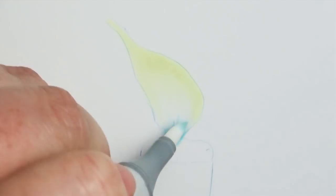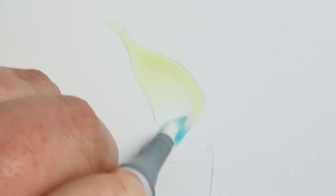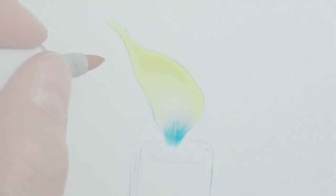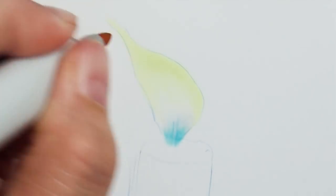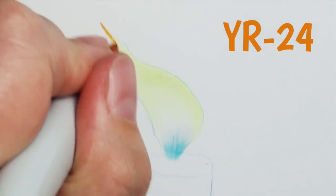A colorless blender can be your best friend at this point, especially if you're trying to preserve your white but you need to blend that blue or yellow into white. Use that colorless blender to do that.